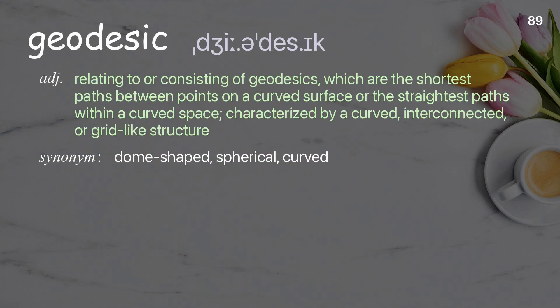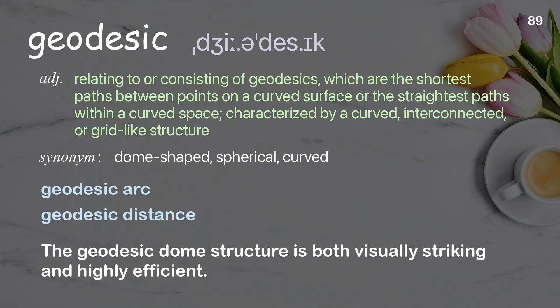Geodesic: Relating to or consisting of geodesics, which are the shortest paths between points on a curved surface or the straightest paths within a curved space, characterized by a curved, interconnected, or grid-like structure. Examples: geodesic arc, geodesic distance. The geodesic dome structure is both visually striking and highly efficient.